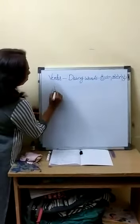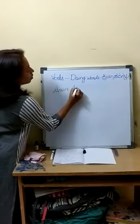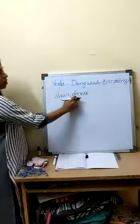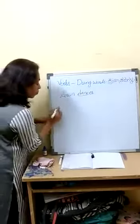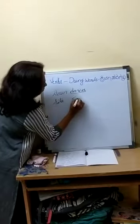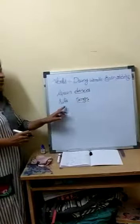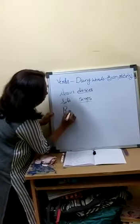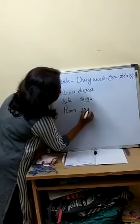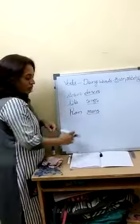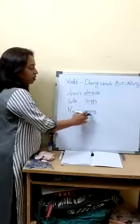We will see verbs with examples. Arun dances — the underlined word 'dances' is a verb. Sita sings — what is Sita doing? She is singing. Ram runs — what is Ram doing? He is running. Ram runs.